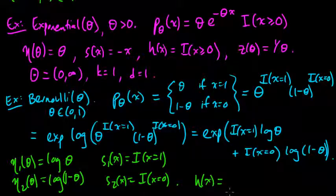Eta I, for each eta, is a function from capital theta to R. It's taking some theta and giving us some real value. S sub i is a function from RD, taking an X and giving us a real number. H is a function from RD, taking an X and giving us a non-negative real number.